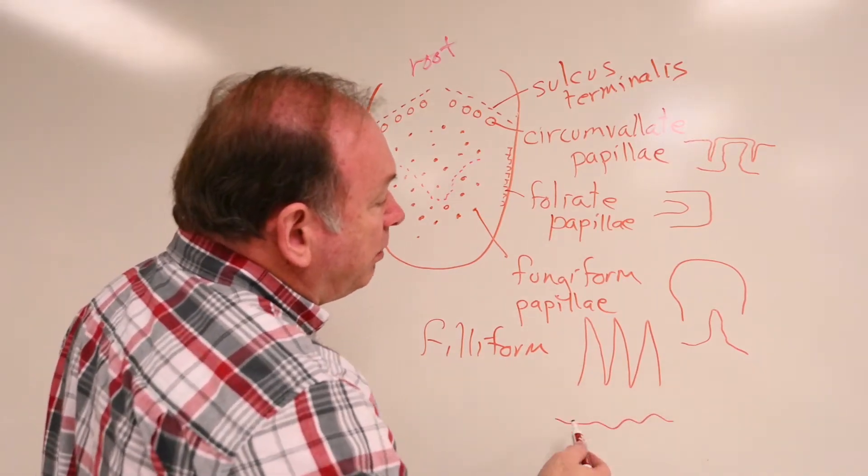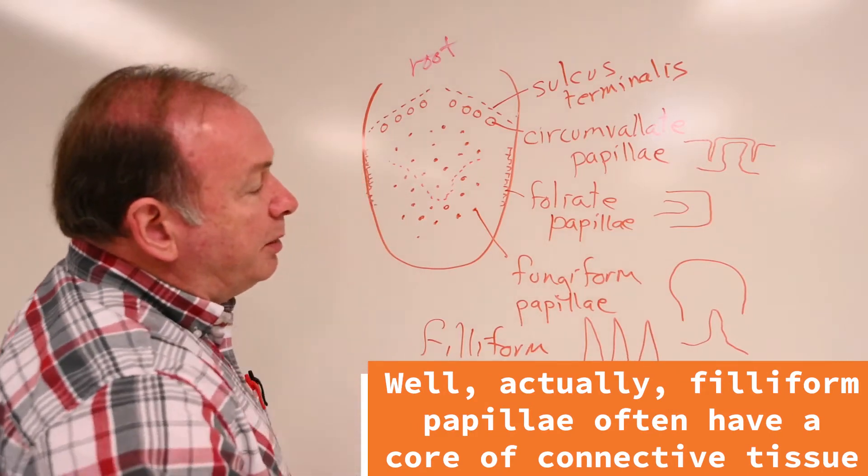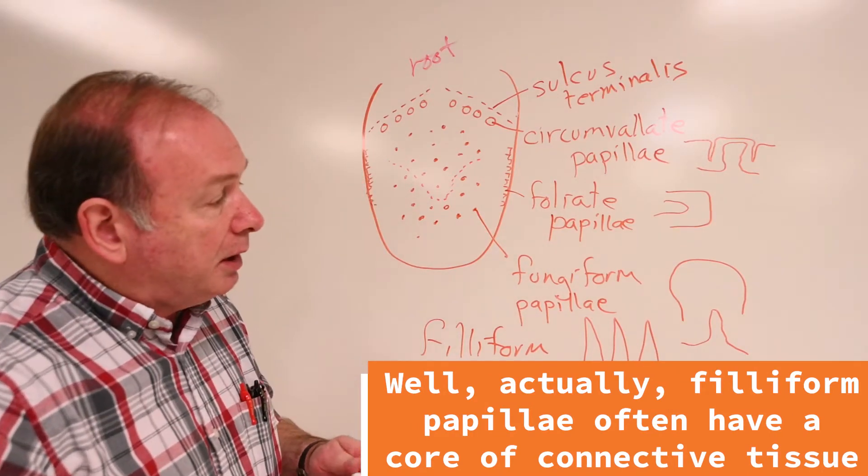But here, the epithelium would be all below that, so they don't have a core of connective tissue that comes up into the filiform papillae.